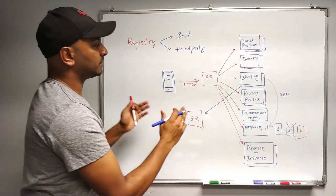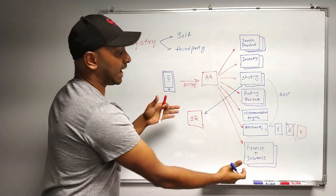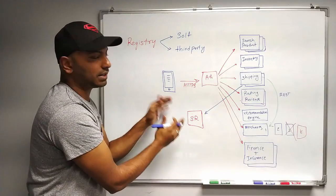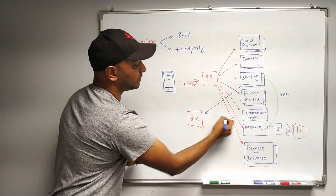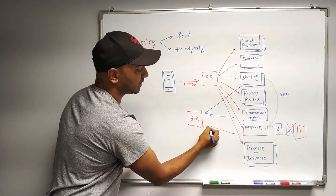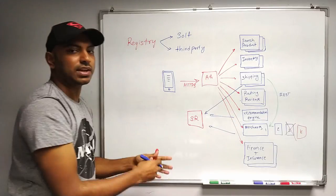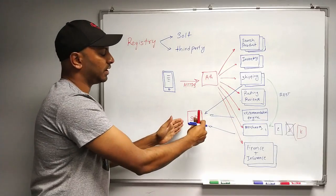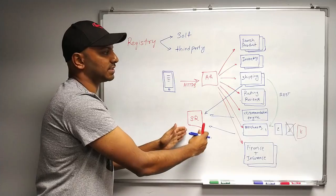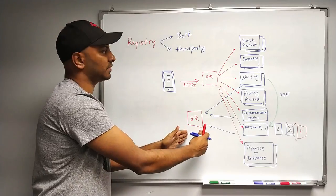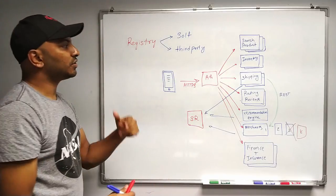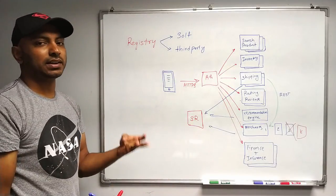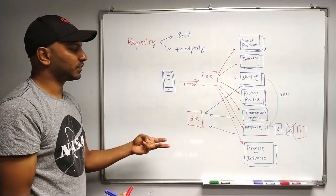This is good — basically every microservice will be doing the same thing, everyone is updating, so we have the latest address of all of the instances of the microservices. Now the second type of registry is third-party registry.